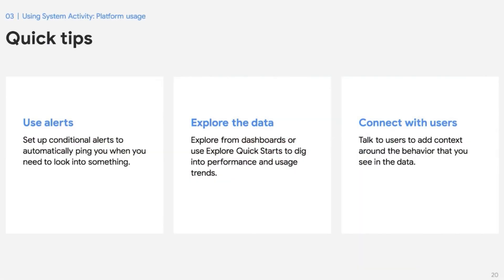I'd like to close this section by sharing three of my favorite tips to take the most advantage of System Activity. One: use alerts — set up conditional alerts to automatically ping you when you need to look into something by clicking the bell on any tile. Two: explore the data — the dashboards give you a great overview, but you can always explore from dashboards or use quick starts to dig into performance and usage trends. And finally, connect with users — talk with them and you'll be able to add context around the behavior you're seeing in the data.